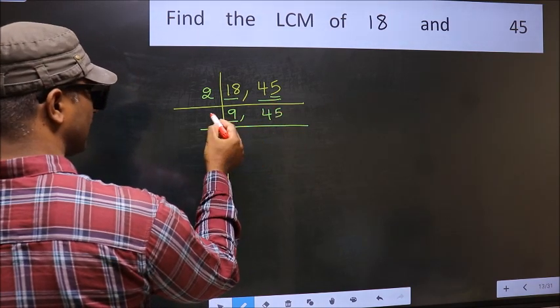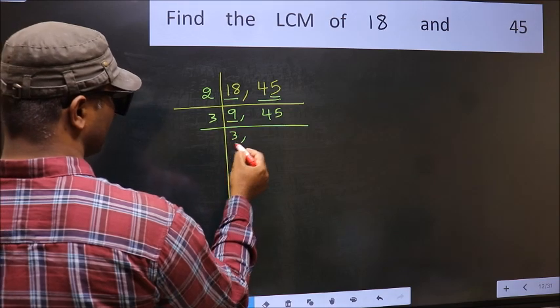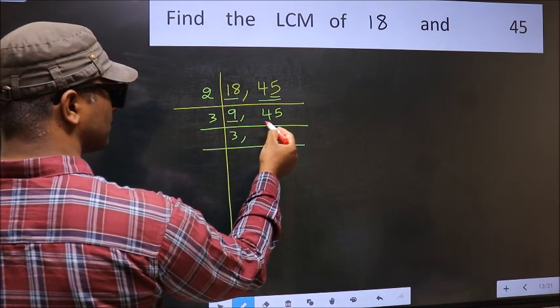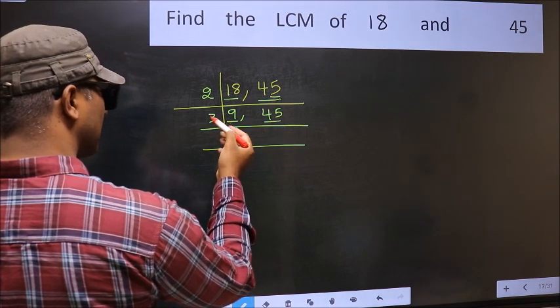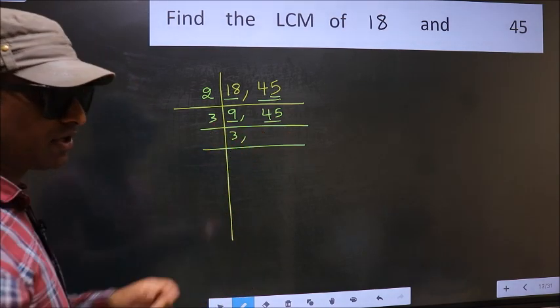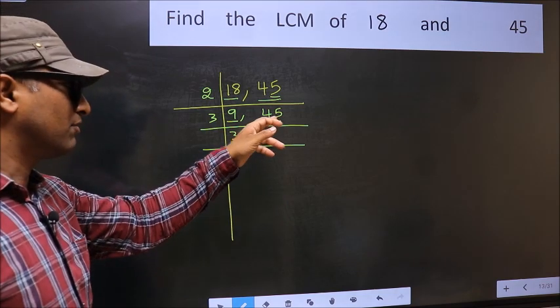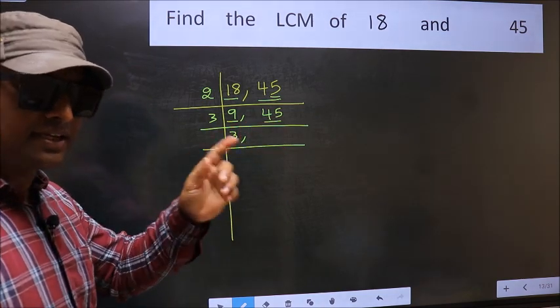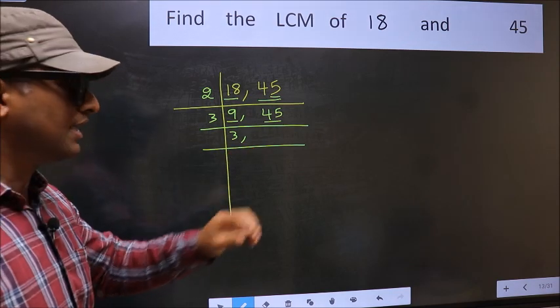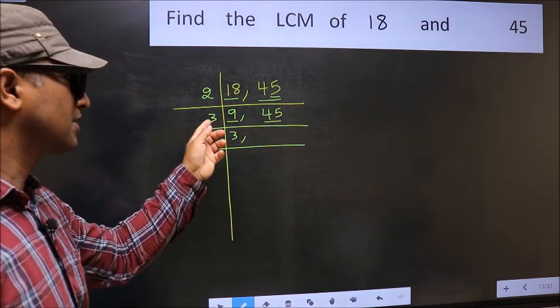Now here we have 9. 9 is 3 threes. The other number, 45. To check whether 45 is divisible by 3 or not, add the digits. 4 plus 5, we get 9. And 9 is divisible by 3. So this number is also divisible by 3.